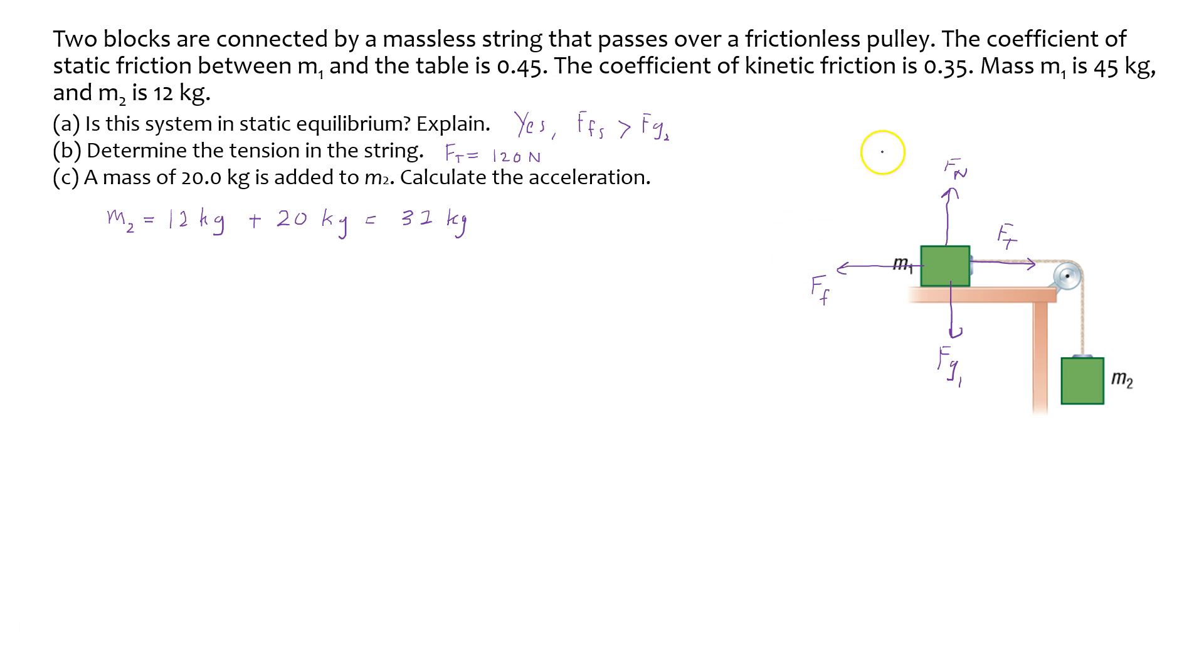In this case, I'm going to assume that it will accelerate, otherwise the question wouldn't be asking to calculate the acceleration unless they're trying to trick you. This is going to be kinetic force of friction. On this block you have Fg2 and tension Ft, same tension as in this part of the rope.